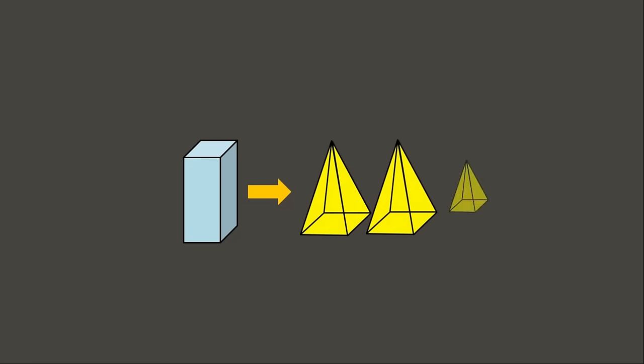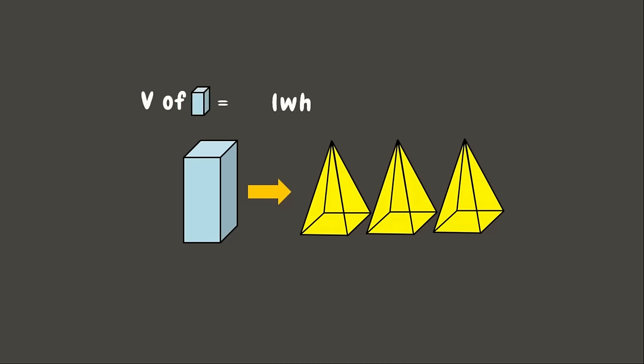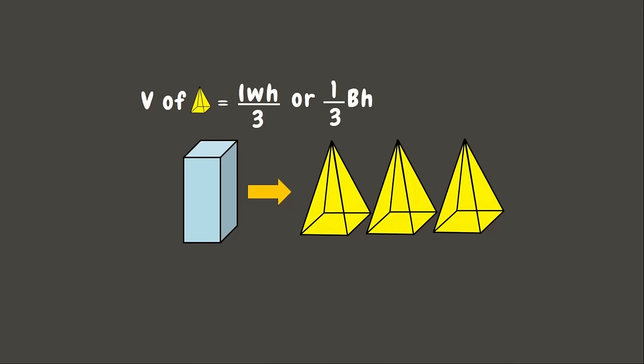From the experiment, we learned that one rectangular prism is equal to three pyramids, considering that they have the same height and base. Therefore, we can say that the volume of the pyramid is equal to one-third of the volume of the rectangular prism. So the formula for the pyramid's volume is one-third times the length times the width times the height, or length × width × height divided by 3. We could also say the volume of the pyramid is one-third of the area of the base times the height.